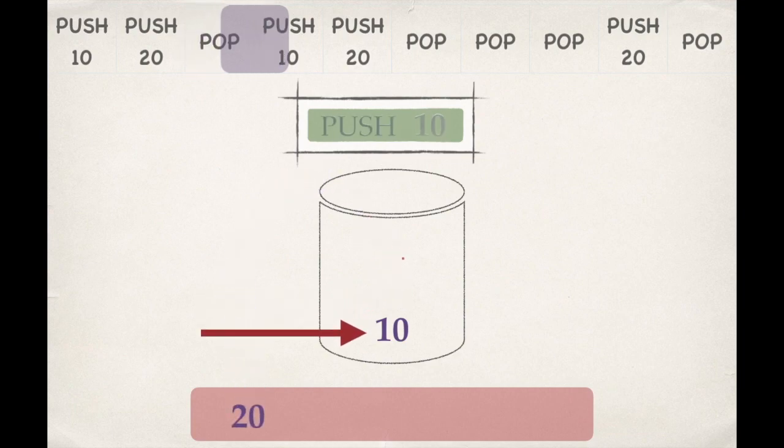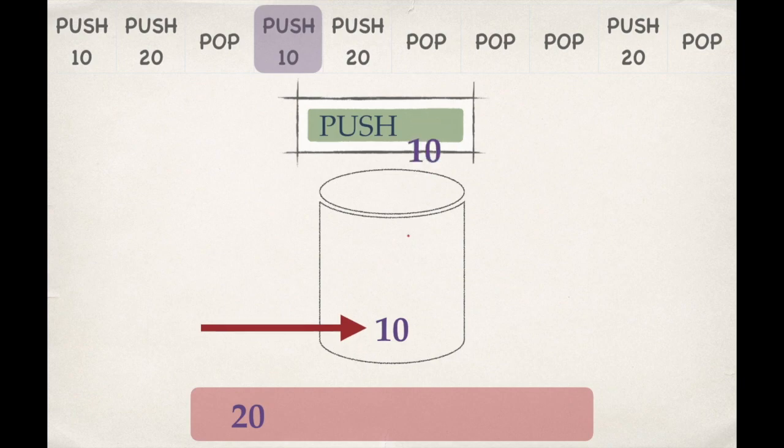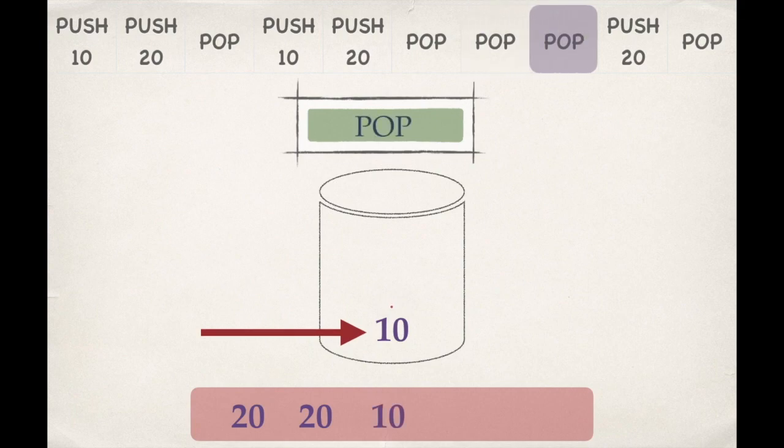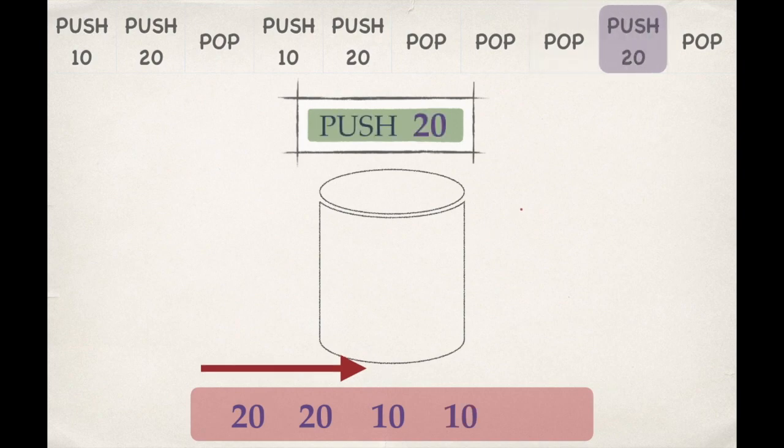PUSH 10: insert 10 into the stack. Insert 20 into the stack. Delete the topmost element, again delete, delete. The stack is empty, so the pointer is outside the stack. Next operation is PUSH 20, so we insert 20 into the stack.